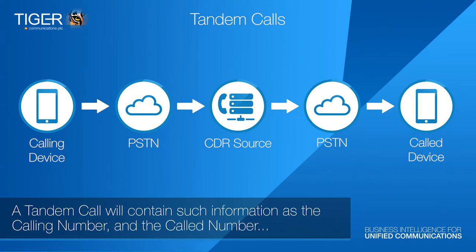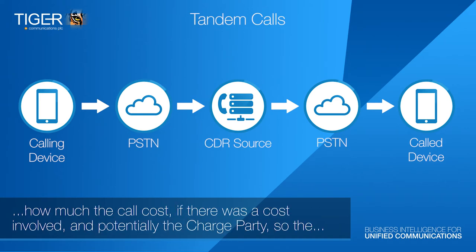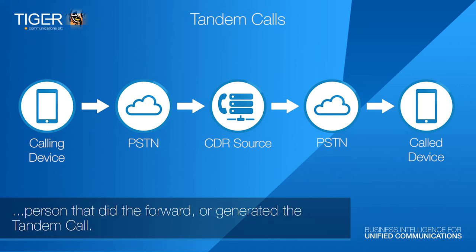A tandem call will contain information such as the calling number and the called number, how long the call lasted, how much the call cost if there was a cost involved, and potentially the charge party — the person who did the forward or generated the tandem call.